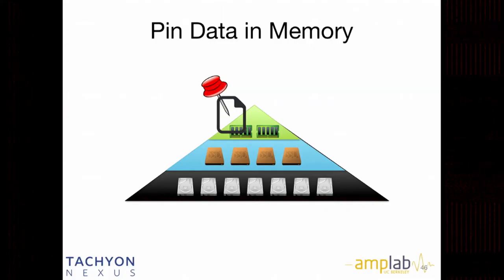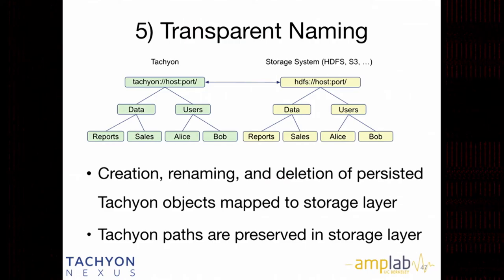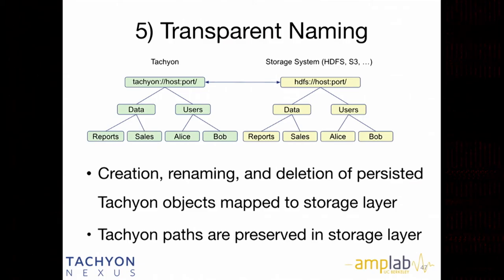Another very interesting feature is transparent naming. Previously, when you deployed Tachyon and wrote data into it, Tachyon would put that data into the under-persistent storage in a file naming format only understood by Tachyon. This meant all your applications had to go through Tachyon. For some companies this is manageable, but for others it takes a long time to migrate. With transparent naming, if you configure the under storage as HDFS, Tachyon will create the same directory hierarchy and the same file names in the under storage as in Tachyon space.